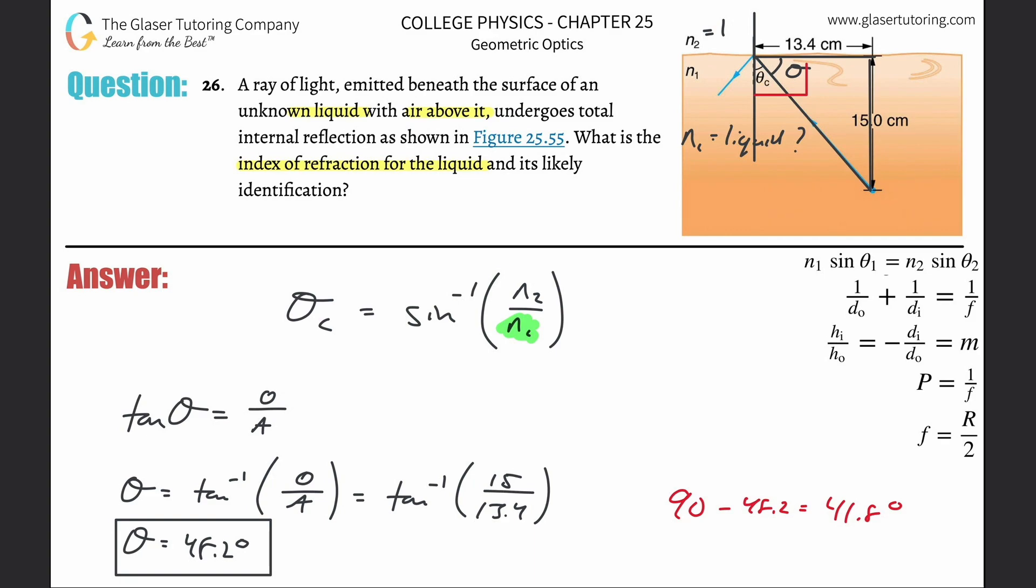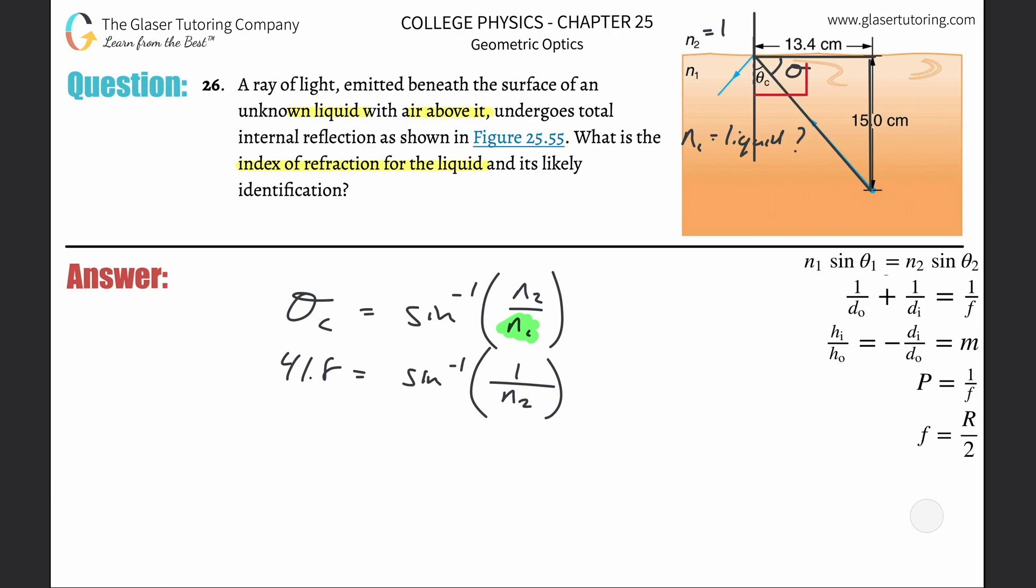This is then going to be: 41.8 equals inverse sine of n2, which was air, over our unknown material n1. Take the sine of both sides to cancel that inverse sine. Sine of this thing equals sine of this whole thing - that just goes away. What you're left with: sine of that exact value is about 0.6662, and that equals 1 over n1.